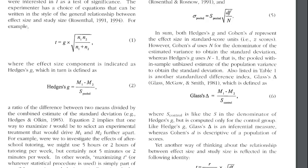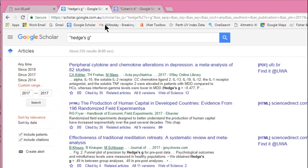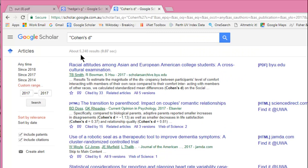But when you actually look at the popularity of each, this is me checking out how often you see Hedges' g reported in studies. In 2017, you can see that it shows up 250 times in Google Scholar, not often at all, whereas Cohen's d shows up a whopping 5,240.